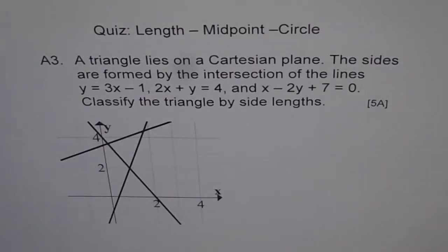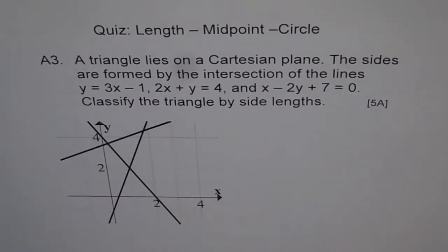Application problem on length and midpoint. A triangle lies on a Cartesian plane. The sides are found by the intersection of the lines y equals 3x minus 1, 2x plus y equals 4, and x minus 2y plus 7 equals 0. Classify the triangle by side lengths.